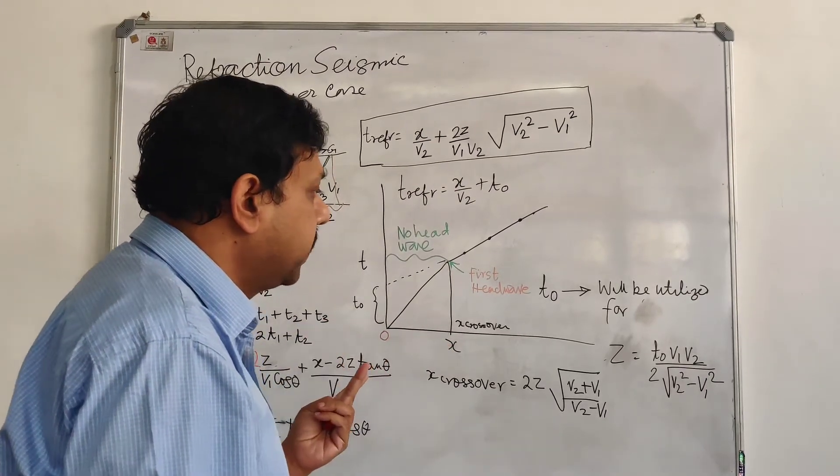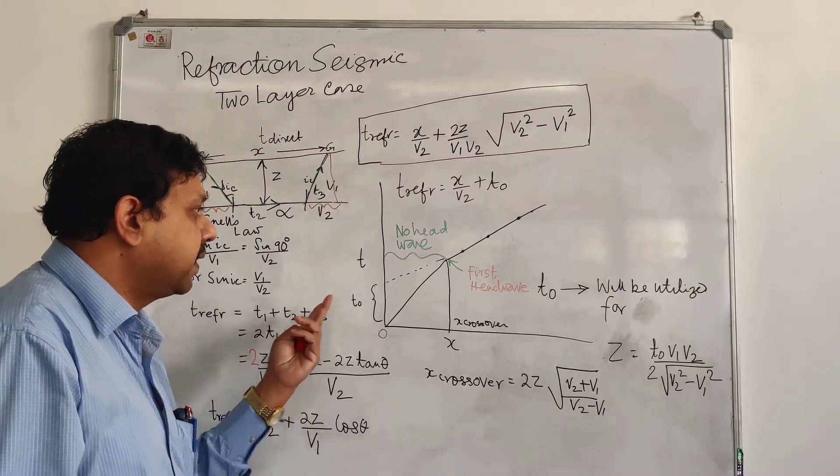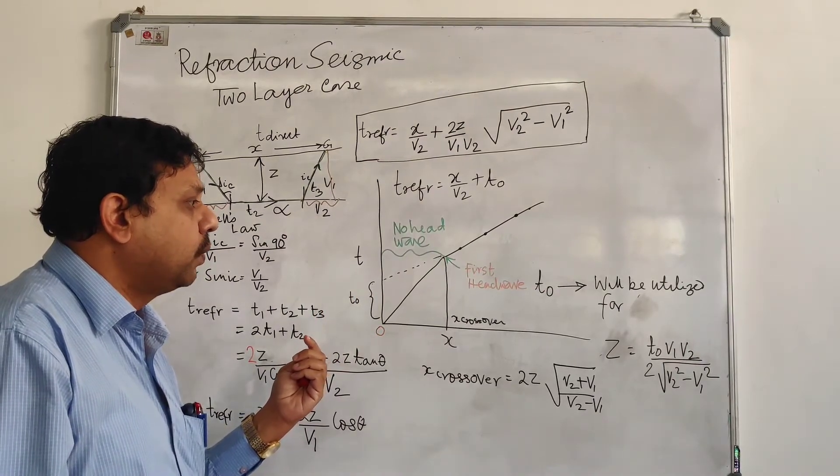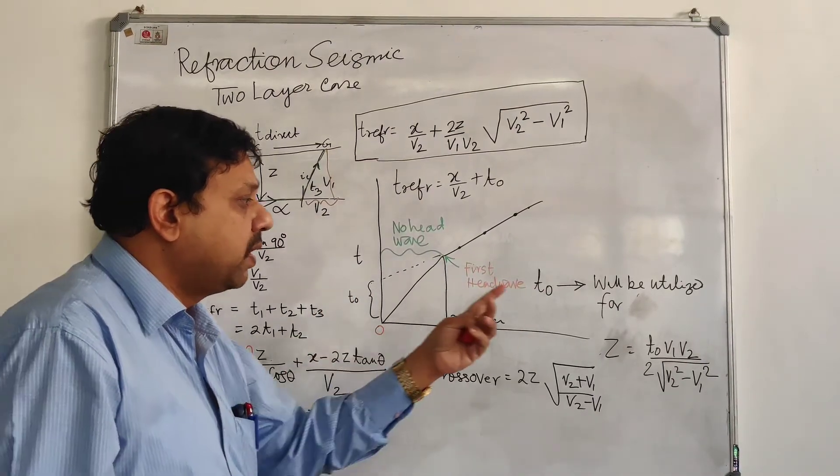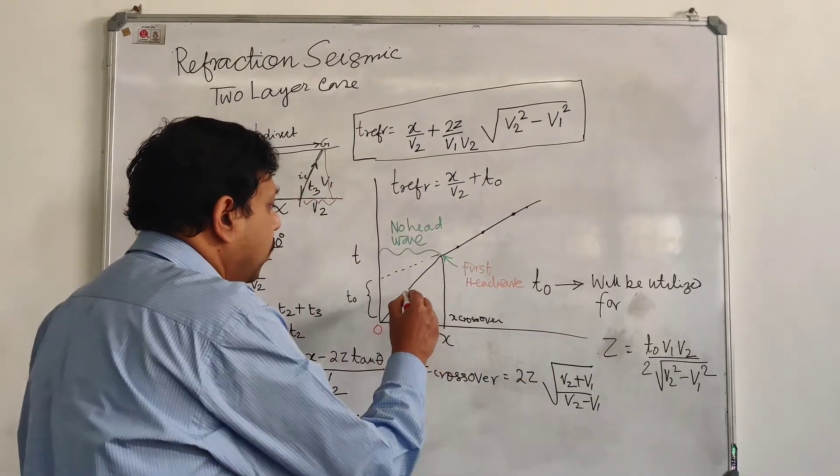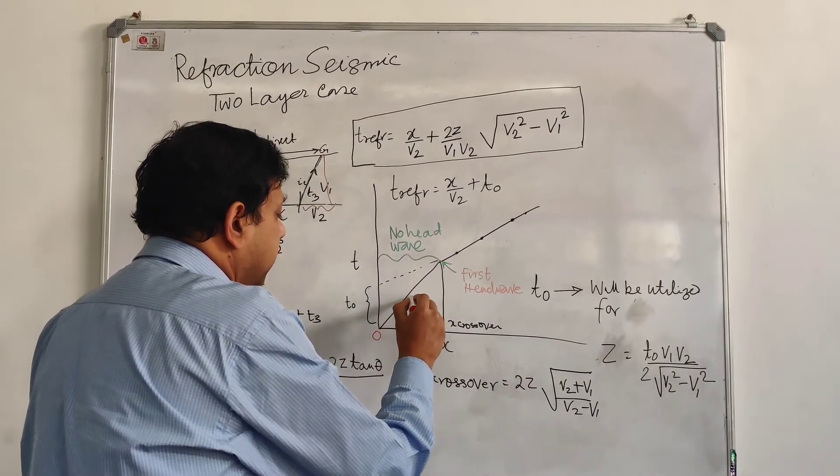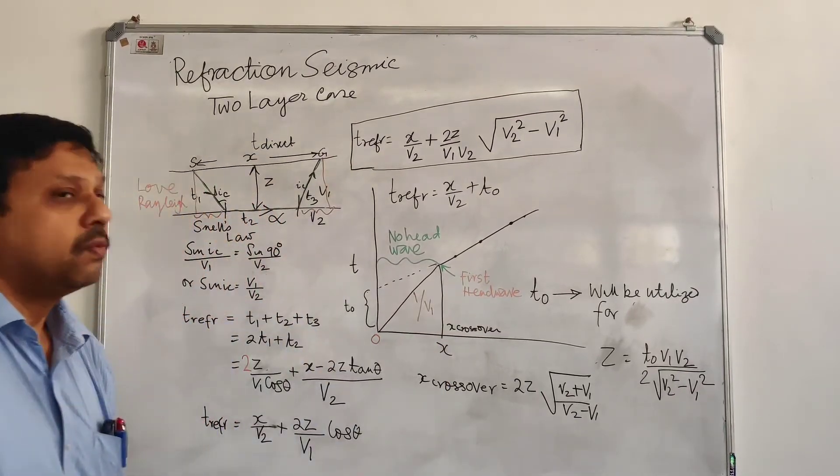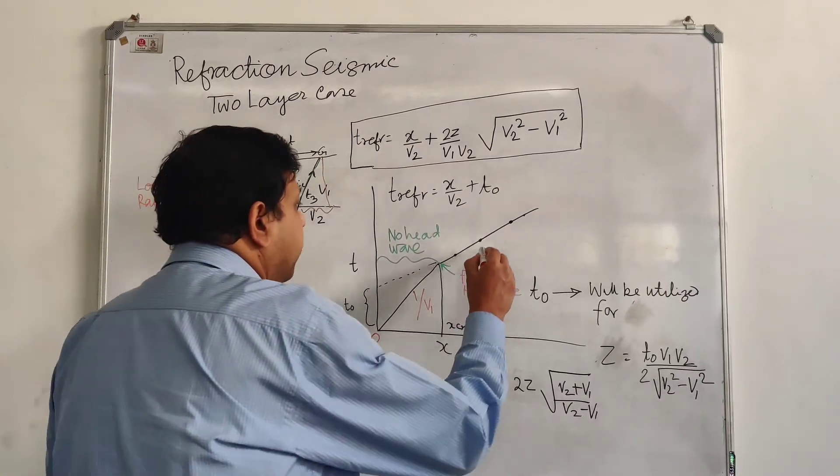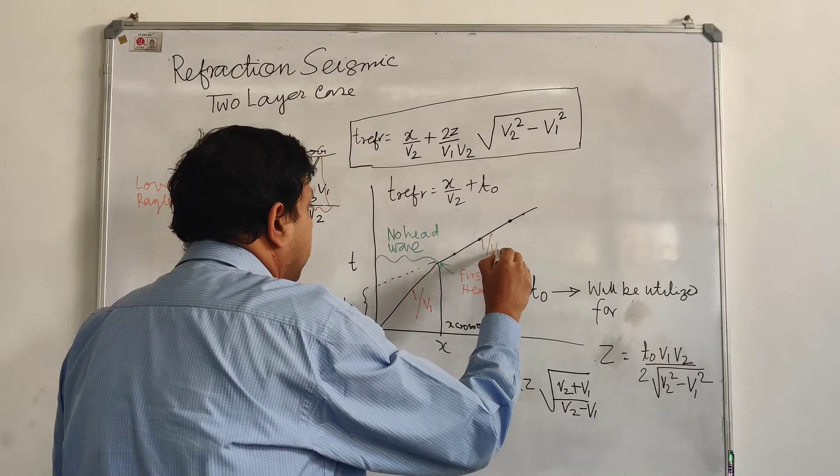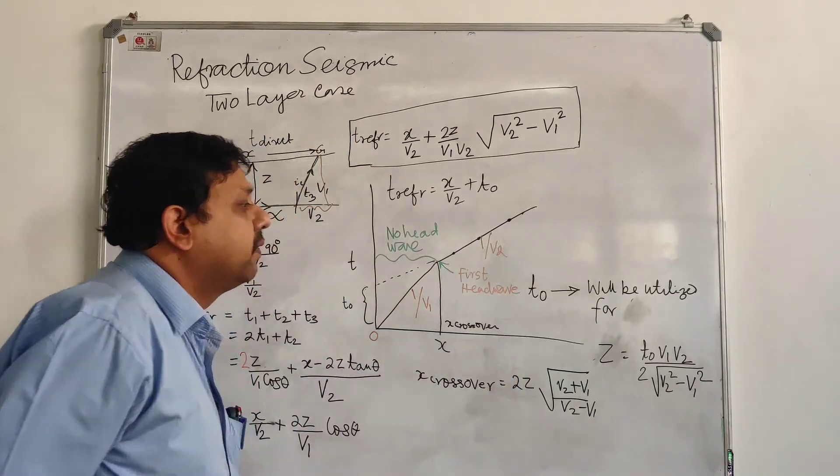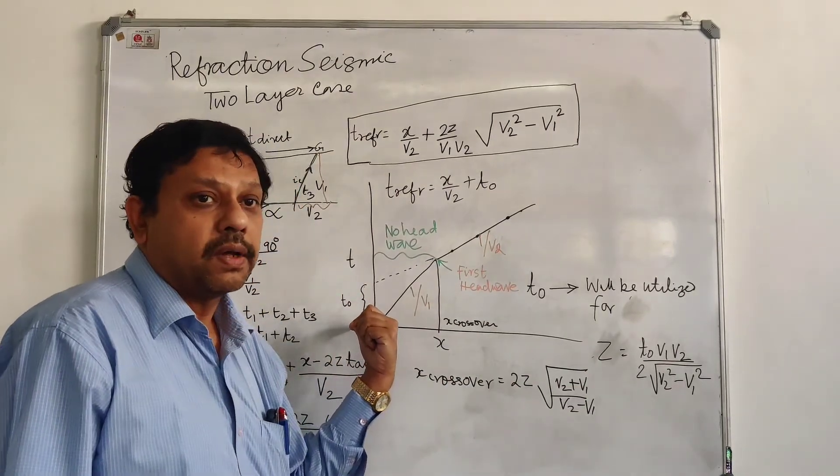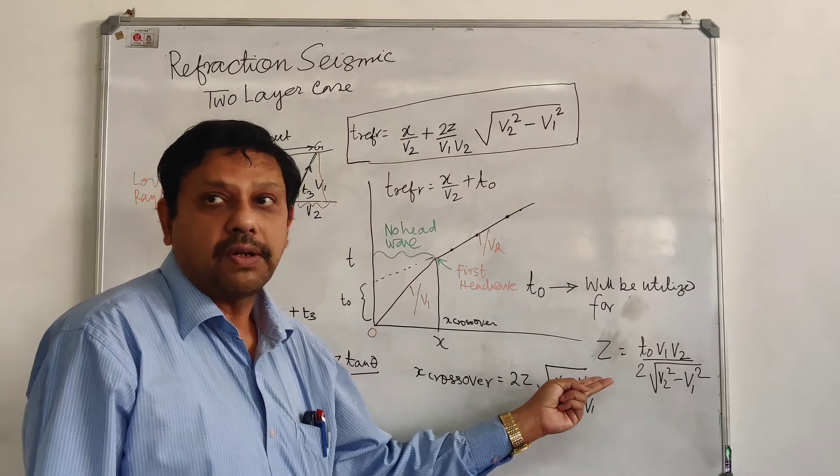So we will find out two things. Z, which will take the help of T0, and if you put that T0 value, we will know the value of V1 and V2 from the slope of this straight line. The direct wave inverse slope will give you velocity V1, and the refraction wave slope inverse will give you V2. We will put the value of V1 and V2. We know T0 from the y-axis, so we know the value of Z.